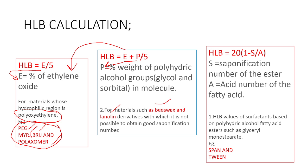We use this formula for beeswax and lanolin because we cannot obtain the saponification value for these compounds. Since we are unable to get the saponification number for beeswax and lanolin, we use HLB = (E + P)/5.